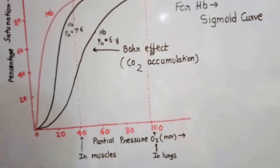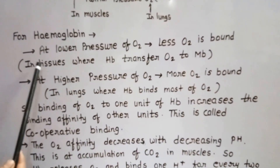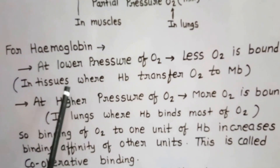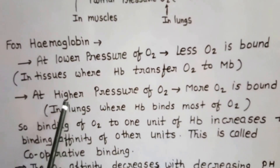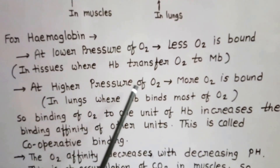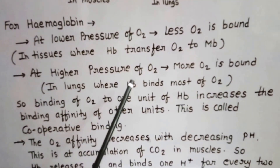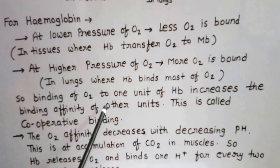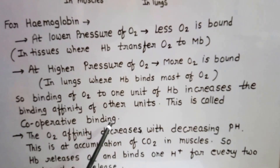From the curve we get the following conclusions: first, at lower partial pressure of oxygen, less oxygen is bound to hemoglobin — this happens in tissues where hemoglobin transfers its oxygen to myoglobin. Second, at higher partial pressure of oxygen, more oxygen is bound — this happens in the lungs. Binding of oxygen to one unit of hemoglobin increases the binding affinity of other units, which is called cooperative binding.